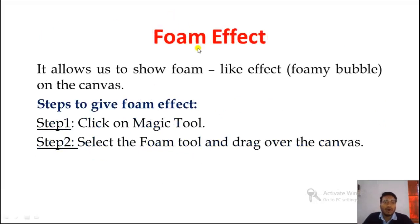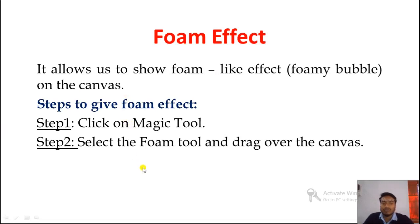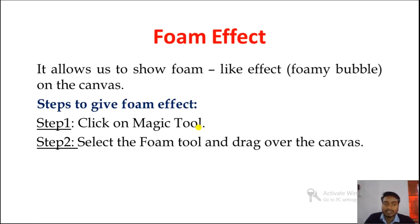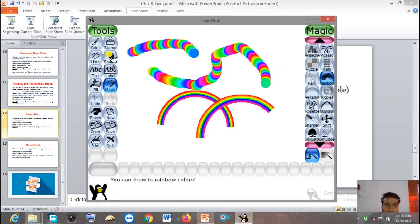Next we have the Foam effect. It allows us to show a foam-like bubble effect on the canvas. The steps are: step one — click on the Magic Tool; step two — select the Foam tool and drag over the canvas. Everything is kept in the Magic Tool, so we always start by clicking on the Magic Tool, then select the Foam tool and drag over the canvas.